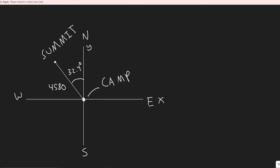In this problem we're told the summit of a mountain 2,450 meters above base camp is measured on a map to be 4,580 meters horizontally from the camp in a direction 32.4 degrees west of north. What are the components of the displacement vector from the camp to the summit? What is its magnitude? Choose x-axis east, y-axis north, and z-axis up.